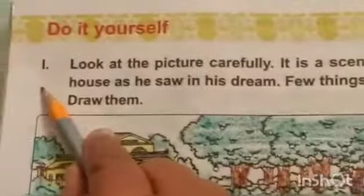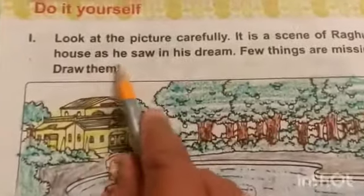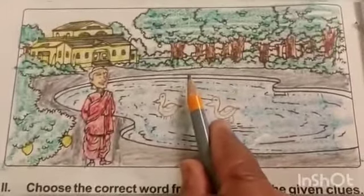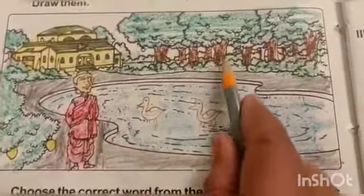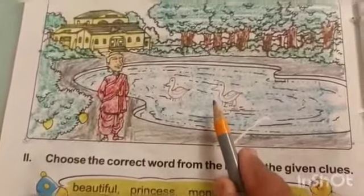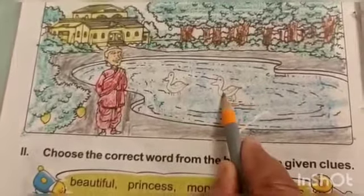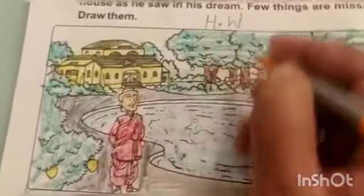Question number one: look at the picture carefully. It is a scene of Raghu's house as he saw in his dream. Few things are missing — draw them. Trees are there, a beautiful house is there, Raghu is there, a pool is there. But few things are missing, so you will draw them here — like ducks. And you will color it. This is your homework.